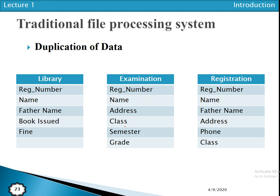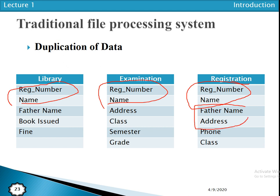For example, looking at the library, examination, and registration sections: registration numbers and names are stored in the library, the same name and registration numbers are stored again in the examination section, and further names and addresses are stored at the registration section as well. Father's name appears at the library and also at registration. The address is also repeated. The same information is stored across different sections.